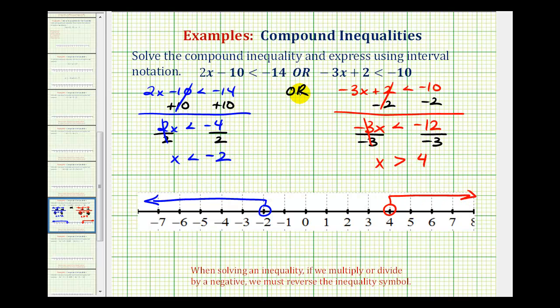And because we have an or, which means union, the solution to this inequality would consist of the interval on the left, as well as the interval on the right. So the solution would be x is less than negative 2 or x is greater than 4.